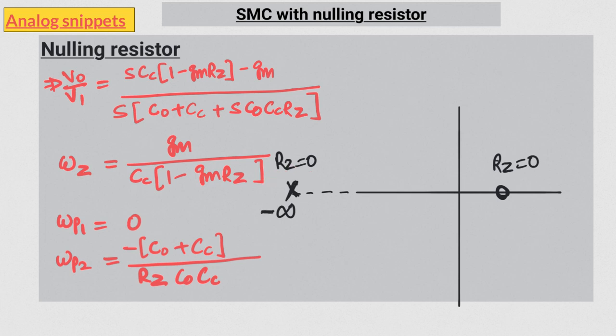Now as we increase RZ, the zero starts to move to the right direction and the pole also starts to move to the right direction. Notice that the pole always remains in the left-hand plane, and that makes sense because otherwise the system will be unstable.